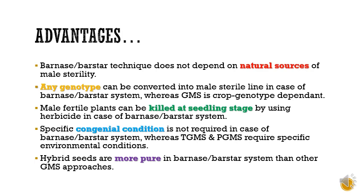Advantages: The Barnase-Barstar system does not depend on a natural source of male sterility, and any genotype can be converted into a male sterile line, whereas genetic male sterility is crop genotype dependent. Male fertile plants are killed at the seedling stage by using the herbicide in the Barnase-Barstar system. Specific environmental conditions are not required, whereas in TGMS specific environmental conditions are required. The hybrid seeds produced by the Barnase-Barstar system are more pure than genetic male sterile approaches.